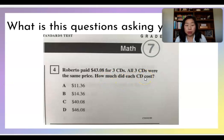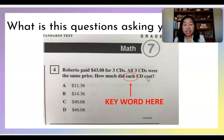Okay, so here's an example, previously released test question. Roberto paid $43.08 for three CDs, all three CDs were the same price. How much did each CD cost? In this example, I'm going to be asking my students, what do we think is going on here? What do we think we need to do? If the question is asking me how much did each cost, that's going to be our keyword.